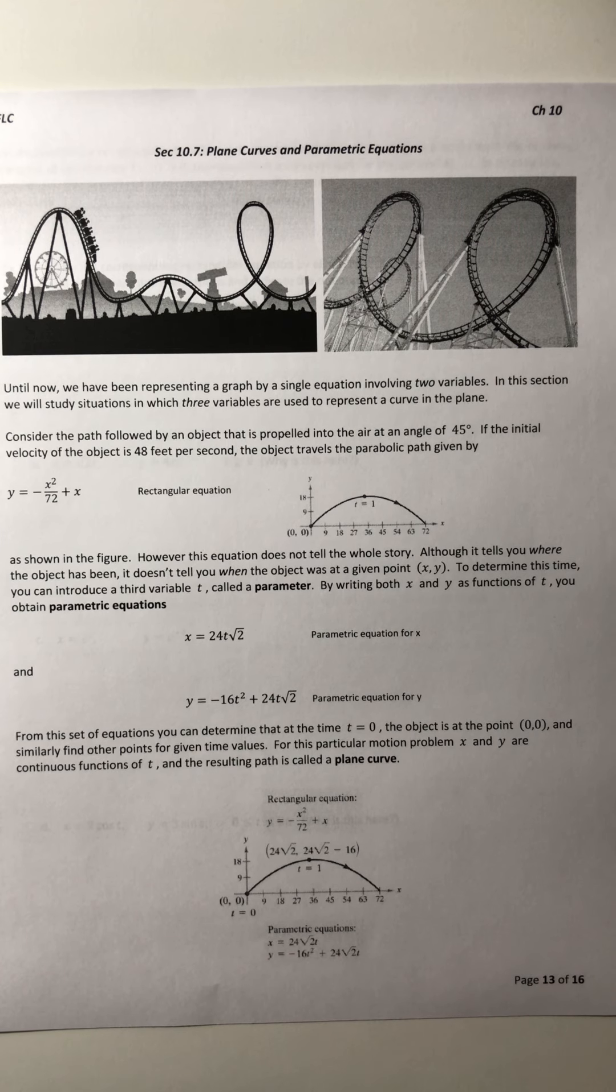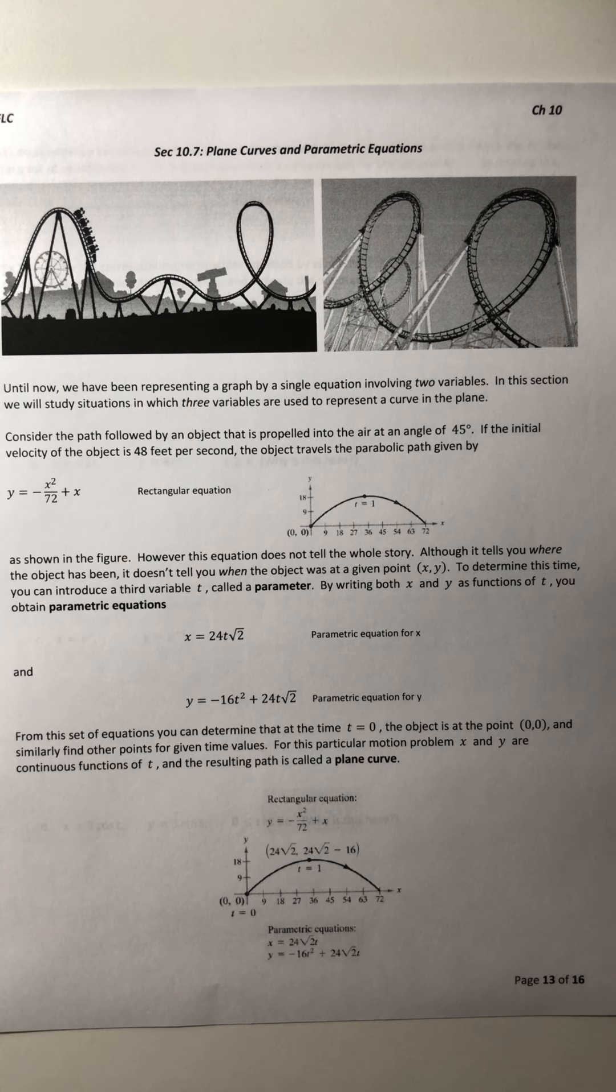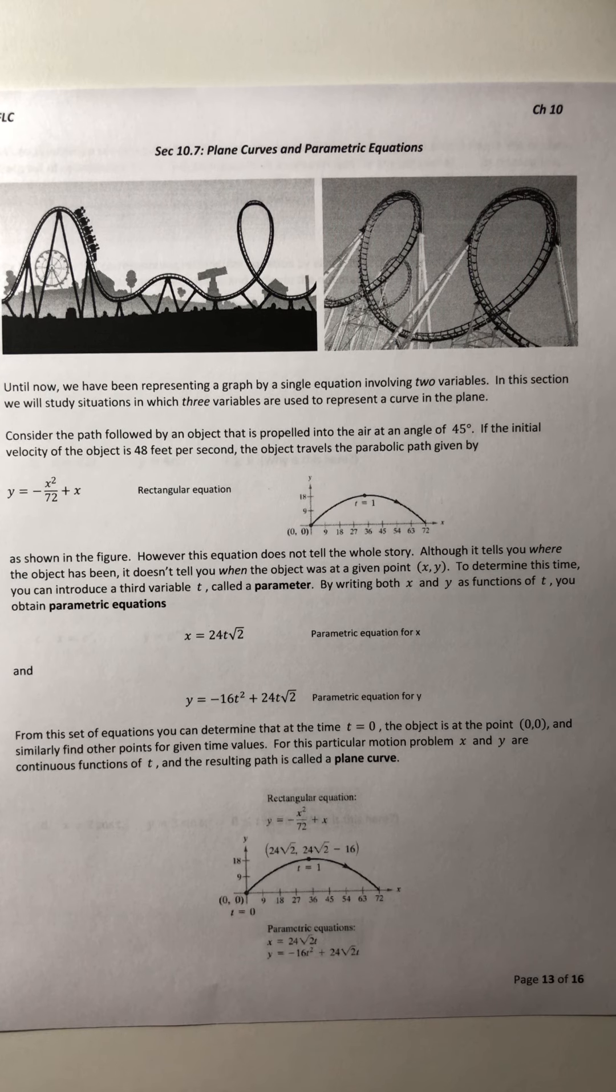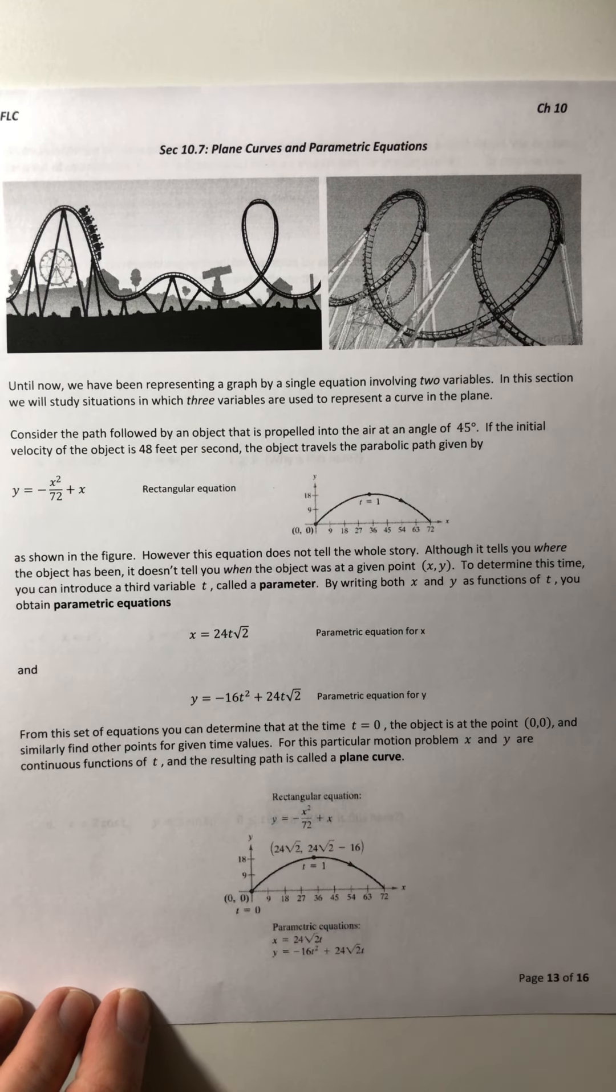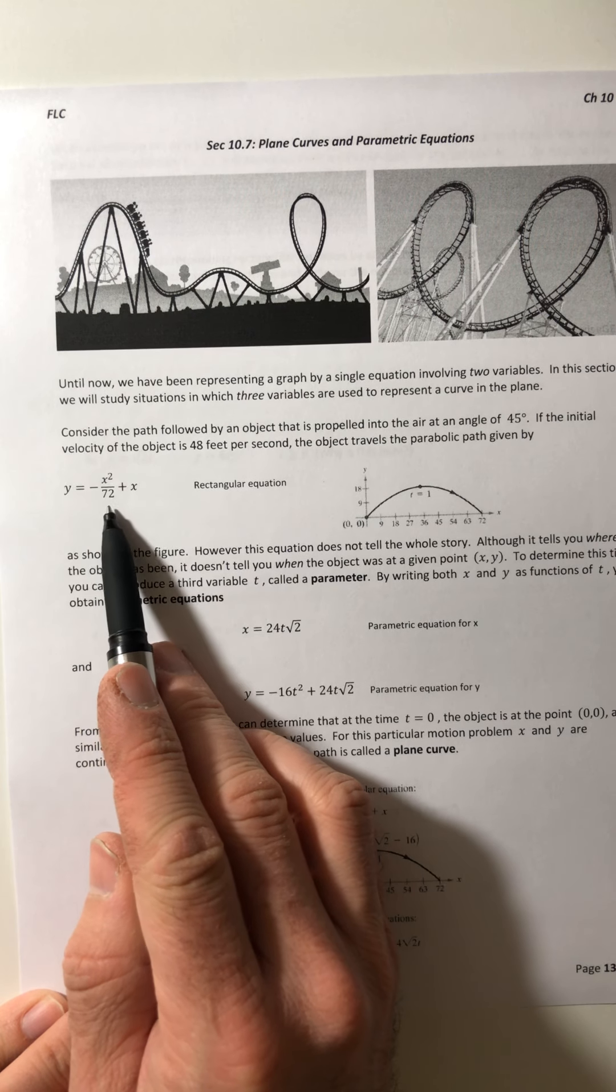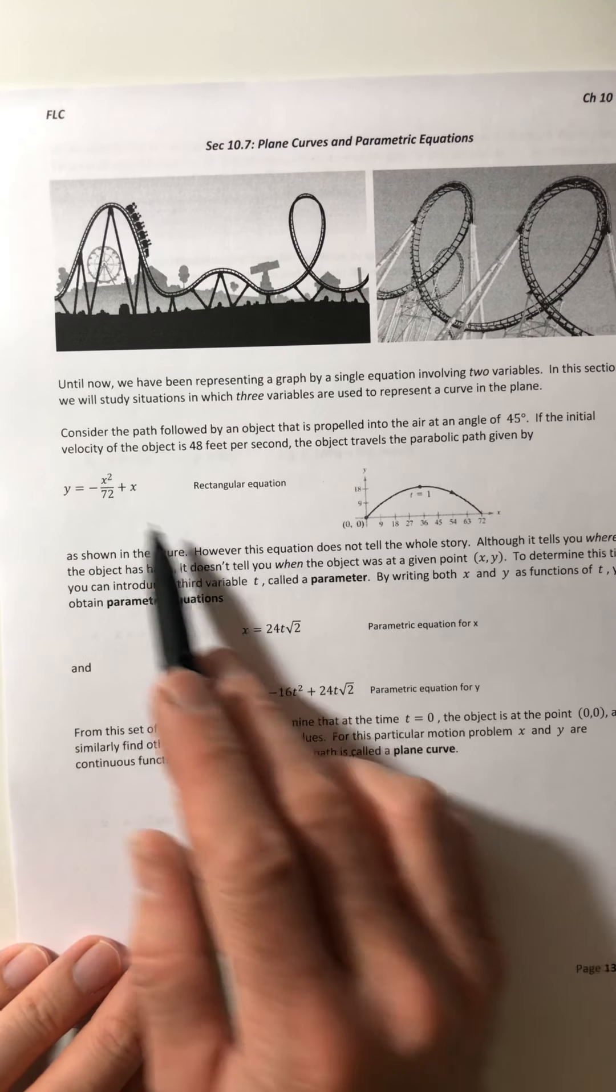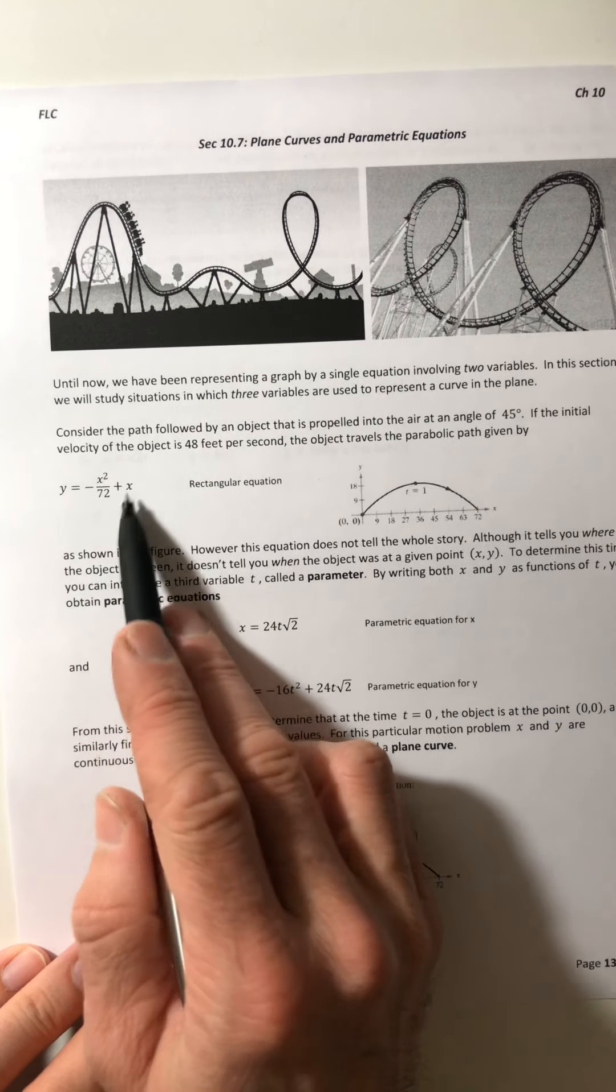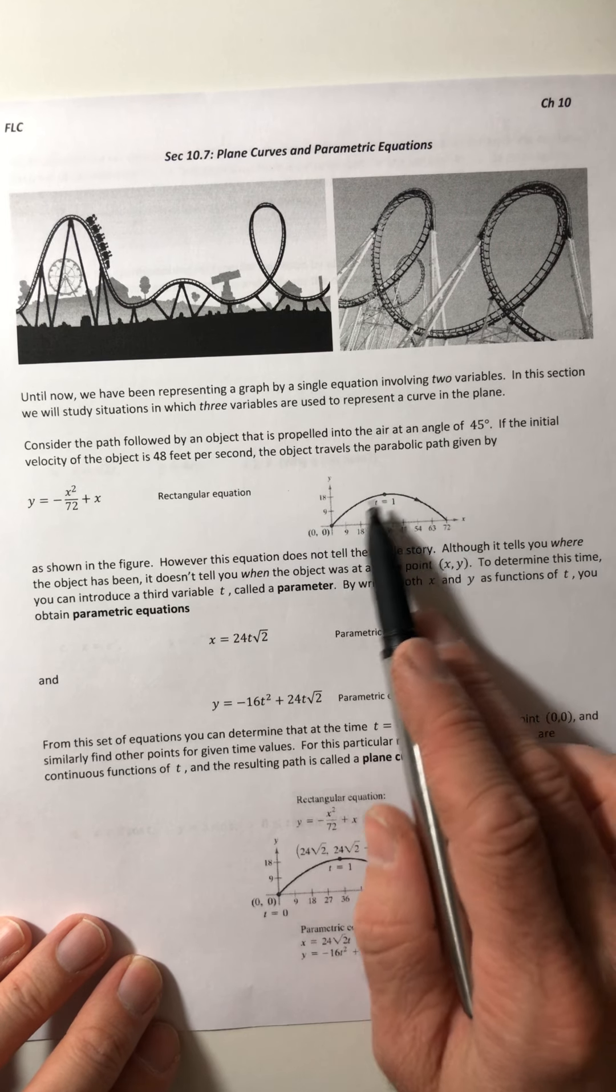Consider the path followed by an object that is propelled into the air at an angle of 45 degrees. If the initial velocity of the object is 48 feet per second, the object travels the parabolic path given by y equals negative x squared over 72 plus x. That would be the equation that it would follow, and it would go right along this curve right here.